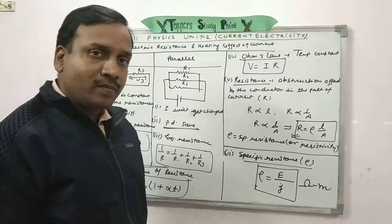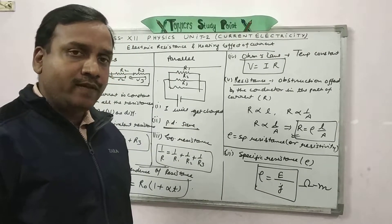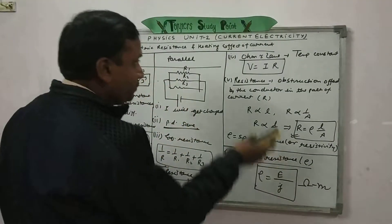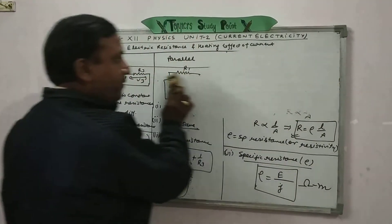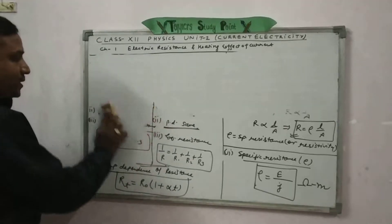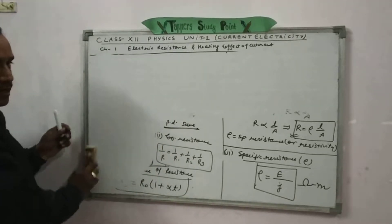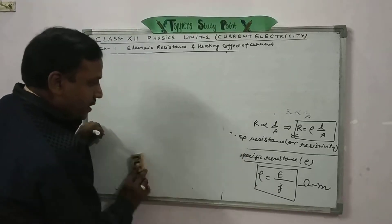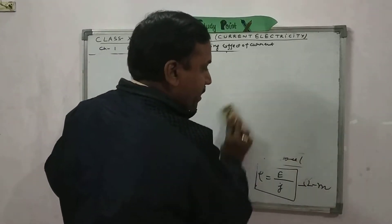Now there are a few more formulas related to the heating effect of current. The heating effect of current means that when you pass current through a conductor, heat is produced. There are several formulas related to this heating effect.